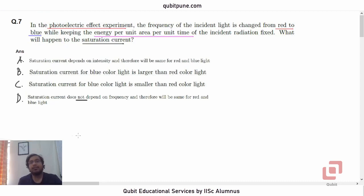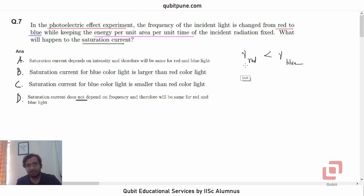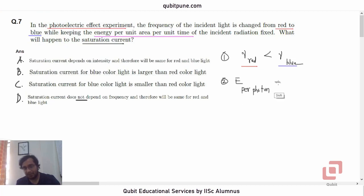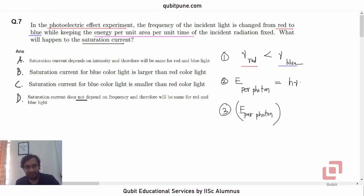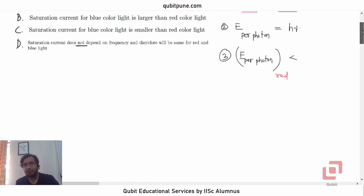We start by reminding ourselves that the frequency of red light is less than the frequency of blue light. Point number two: we also know the equation involving Planck's constant, the frequency of a photon, and the energy. Energy per photon equals hν. So energy per photon of red color will obviously be smaller than energy per photon of blue color.